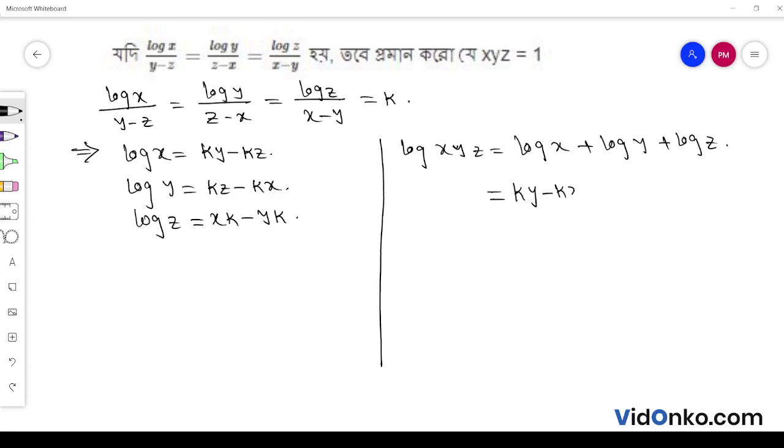Substituting the values: ky minus kz plus kz minus kx plus kx minus ky equals zero.